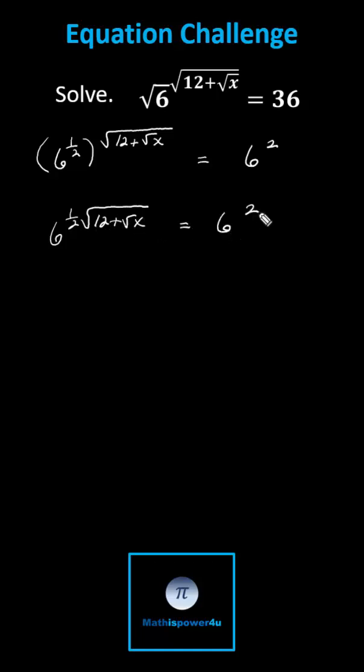Because the bases are the same and the expressions are equal, the exponents must be equal. One-half times the square root of the quantity 12 plus the square root of x must equal two.